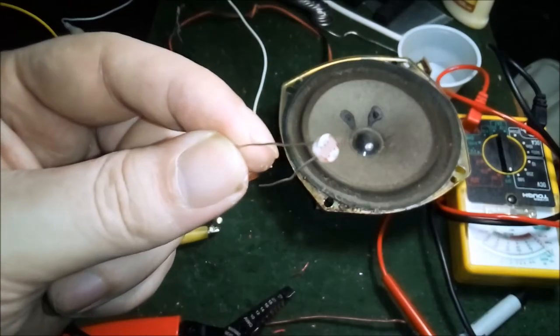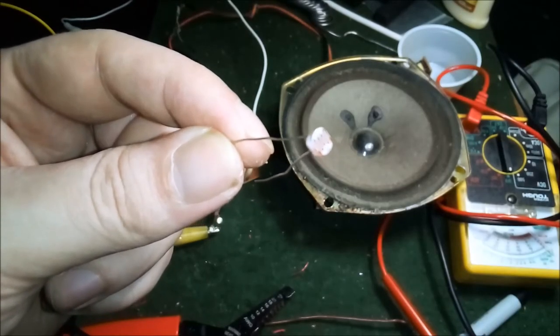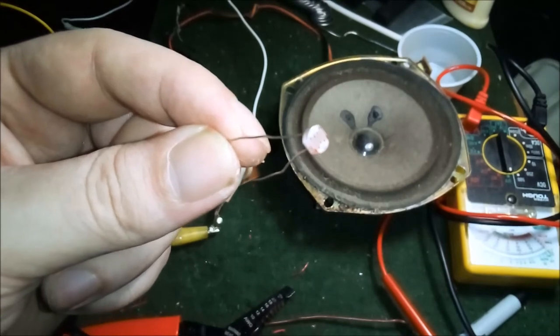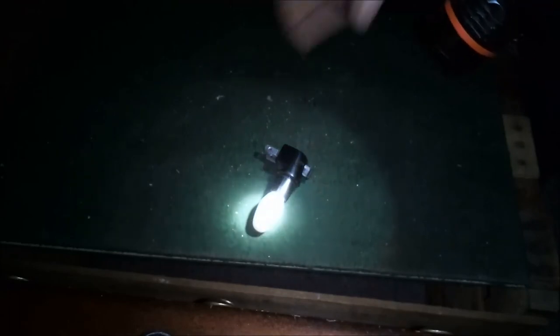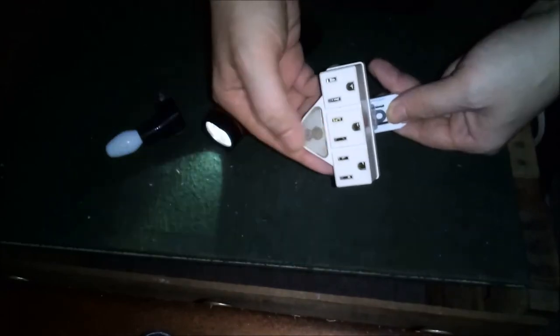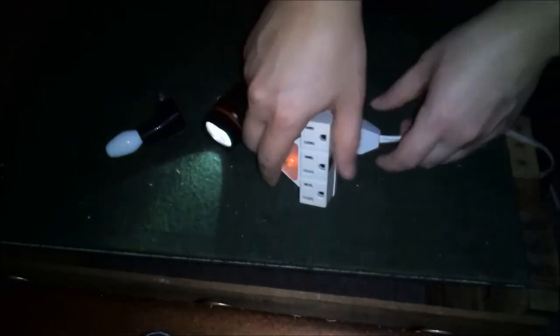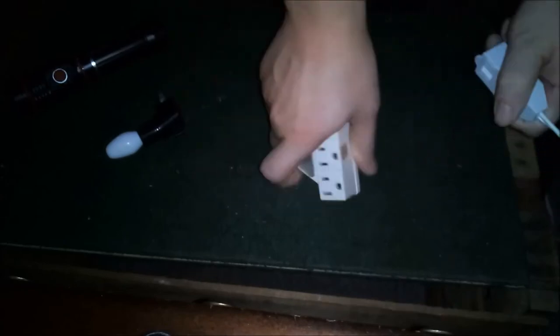Now we need a component called a light-dependent resistor. You probably think there's no way in hell you're gonna find one of these around the house, but it's just a light sensor. Your wife, daughter, little sister probably has an automatic nightlight, or maybe you have one of these plugs that lights up so you can see it in the dark. Well, unplug it for safety and get the hammer. Get me out of this!